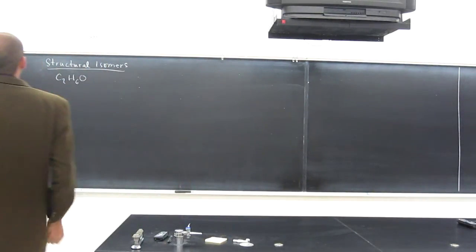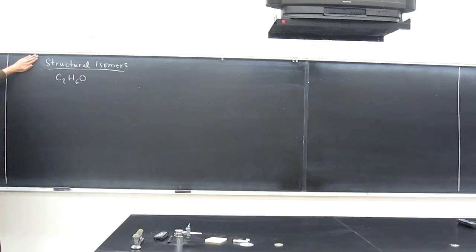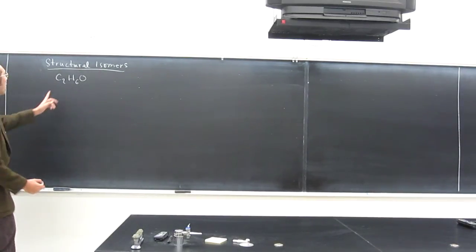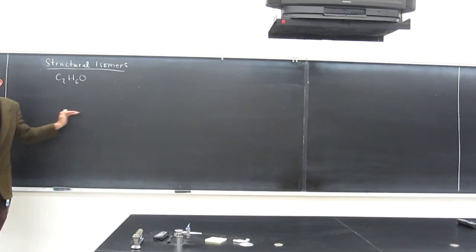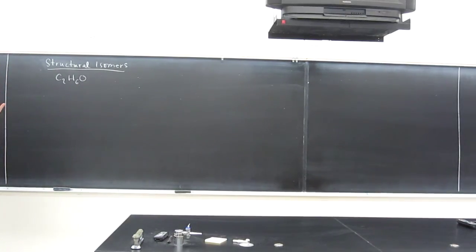So we can do an example of some structural isomers with this molecular formula here. C2H6O, remember the H's always have to be on the outside of the molecule because they can only make one bond. So the carbons and oxygens have to be linked as the backbone chain.